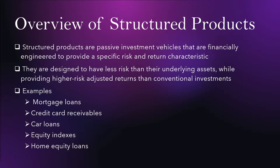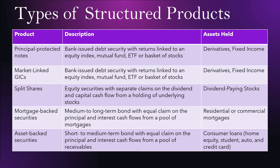We are specifically going to be going over five different types of structured products. First, principal protected notes or PPNs — these are bank-issued debt securities with returns linked to an equity index, mutual fund, ETF, or basket of stocks. We will go over some examples of principal protected notes as well.